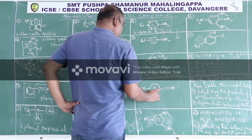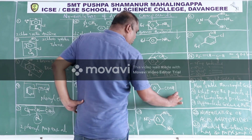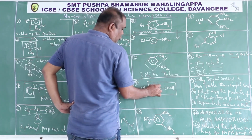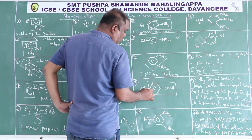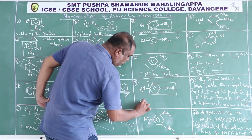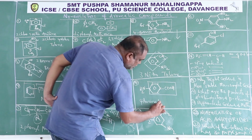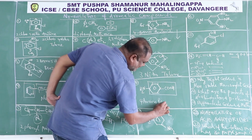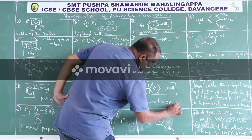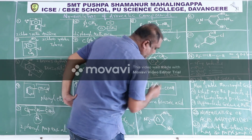The base compound is benzoic acid. Numbering 1, 2, 3, 4: the fourth carbon has an amino group, therefore the IUPAC name is 4-aminobenzoic acid.